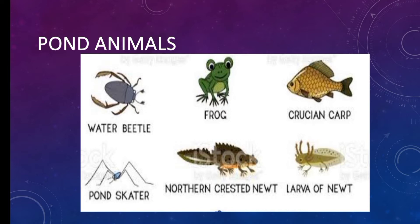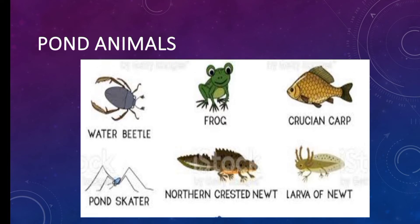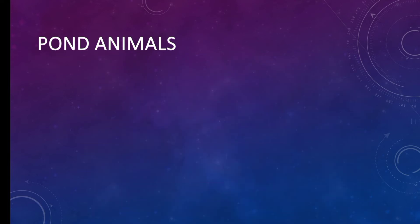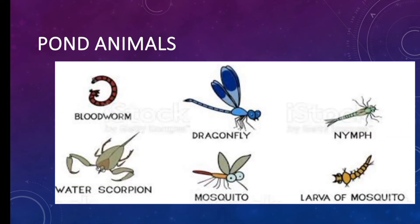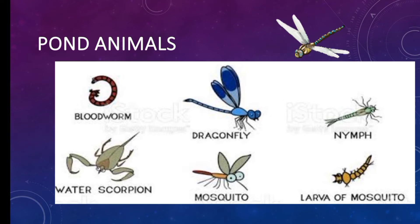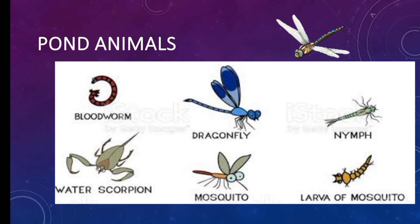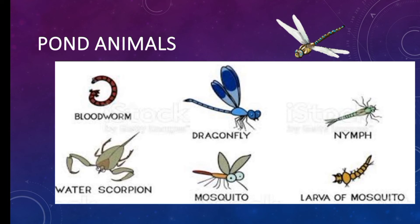Larvae of newt, blood worm, dragonfly, knife fish, water scorpion, mosquitoes, and larvae of mosquitoes can also be found in a pond.